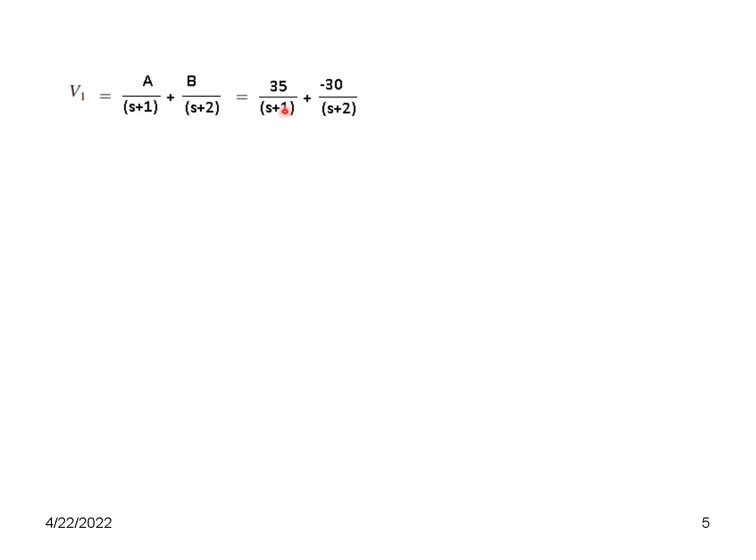So we had got this value of V_1, and now we can easily move into the time domain. So taking the inverse Laplace, 35 and (S + 1) will become 35e^(-t). Similarly here -30, and (S + 2) will give us e^(-2t). So this is the answer, but in a neat form we can write it like this: we can write u(t) with these values, because u(t) means that this function is valid after t = 0. So I hope you have been able to follow this. Let me know if you face any difficulties.